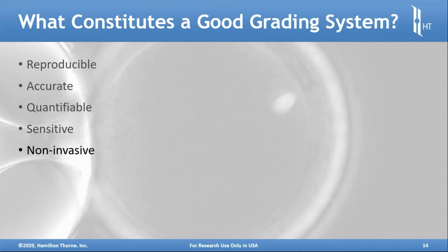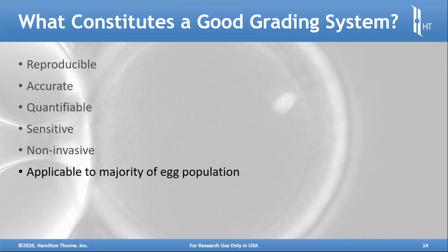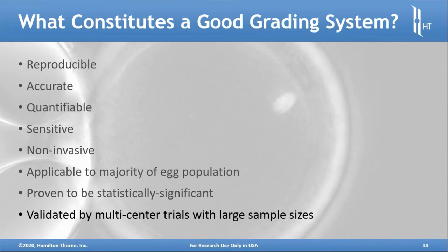It's also preferable if the technique or technology is non-invasive and can be applied to the majority of oocytes retrieved. Reproducible, accurate, quantifiable, and sensitive — all of this boils down to being statistically significant. And it should be something that has been validated across many centers with large sample sizes.